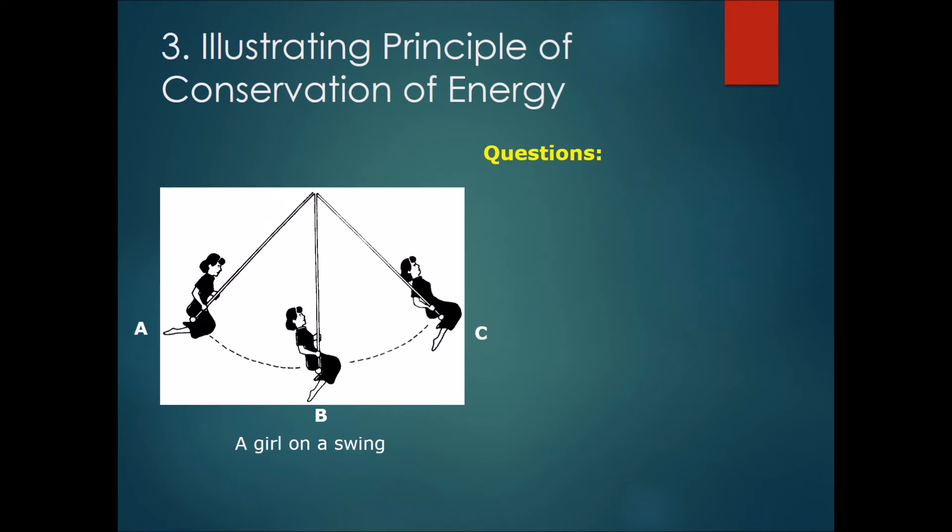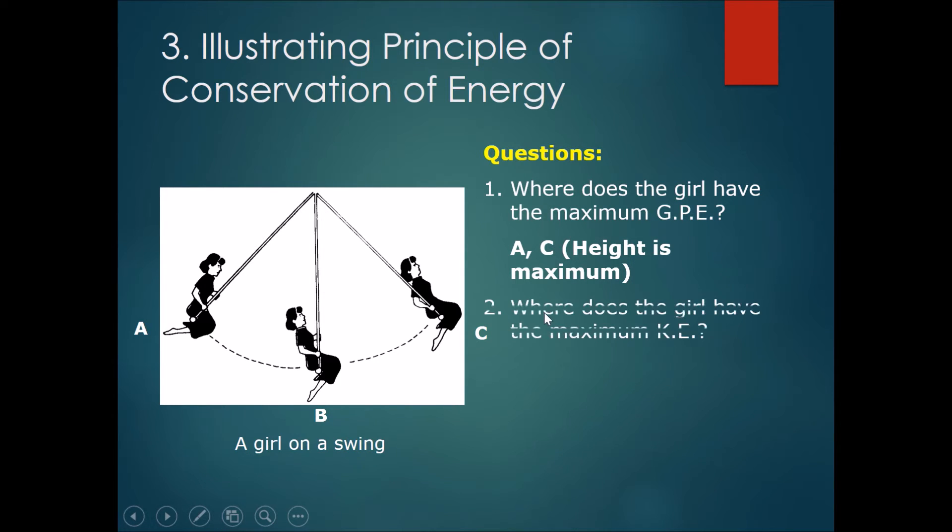Using the example of a girl on a swing, a similar concept. A girl is just swinging back and forth. Where does the girl have the maximum GPE? The answer would be at the positions A and C, where the height above the base is at its maximum. Question number two, where does the girl have the maximum KE? Where is it the fastest? The answer is at B.